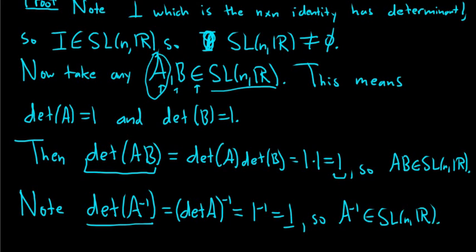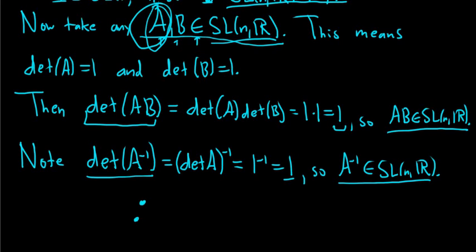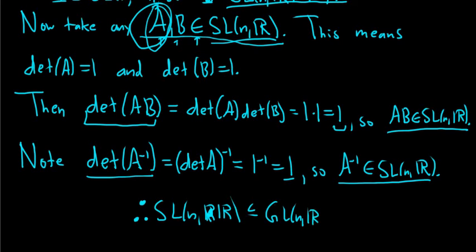We've now shown all three criteria: SL_n(R) is nonempty, it's closed under the group operation, and it's closed under inverses. Therefore, we have shown that the Special Linear Group is a subgroup of the General Linear Group. And that completes the proof.